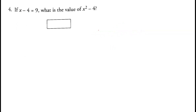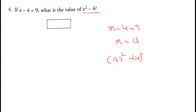Question 4: x minus 4 equals 9, so x equals 13. What is x squared minus 4? That's 13 squared minus 4, which is 169 minus 4, equals 165.